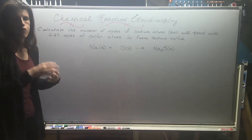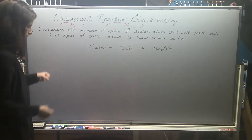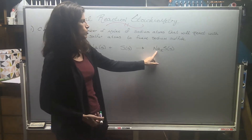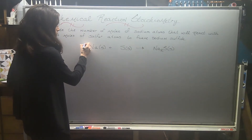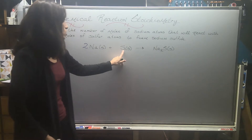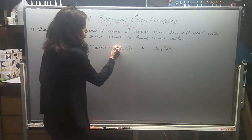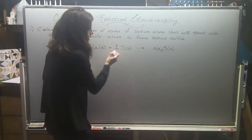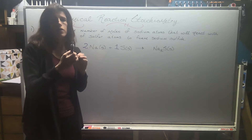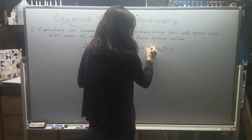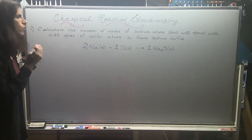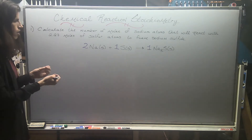The first thing I need to do is write a balanced equation. They give us a skeleton, so we just have to balance it. I see that there are two sodiums over here, so I'm going to put a two out front. There's one sulfur on this side — the ones are understood, but I'm going to write them in purple to emphasize the conversion factors. So those are the coefficients of our balanced equation.